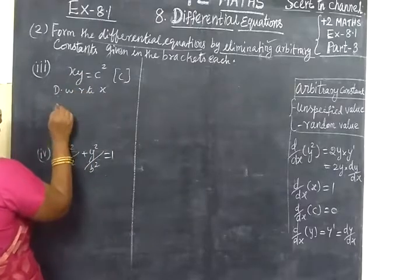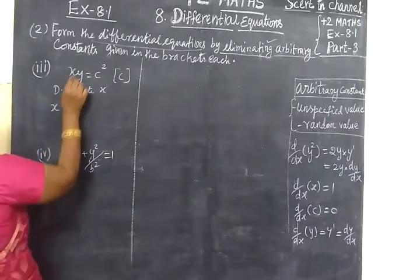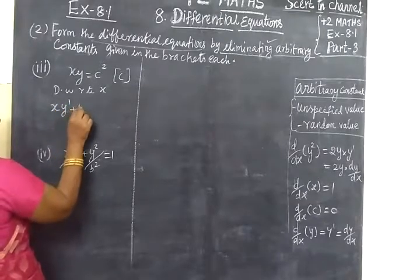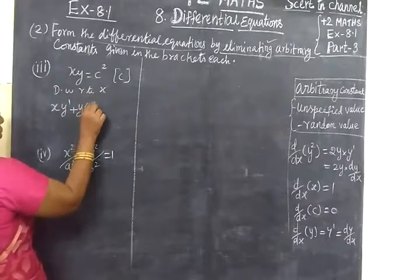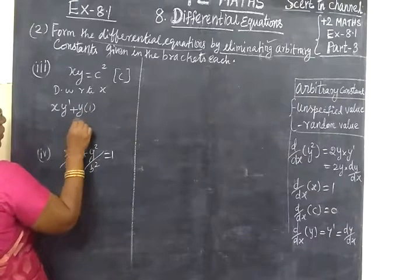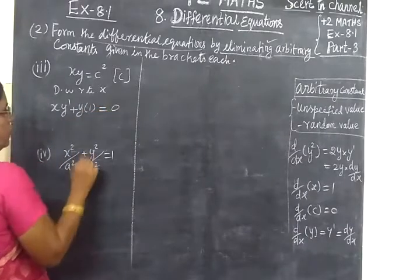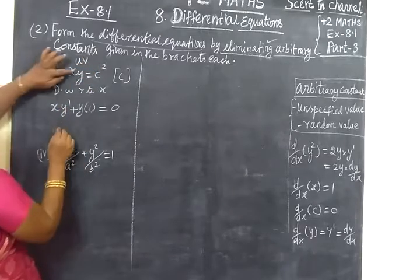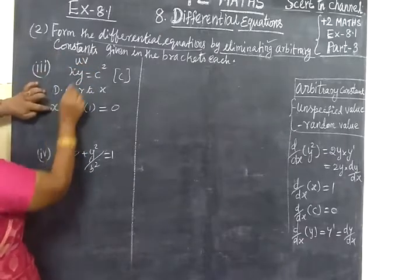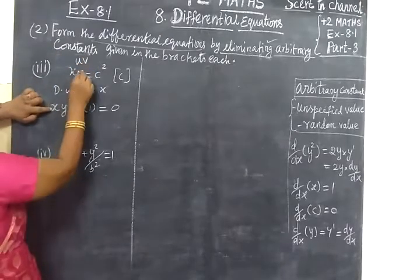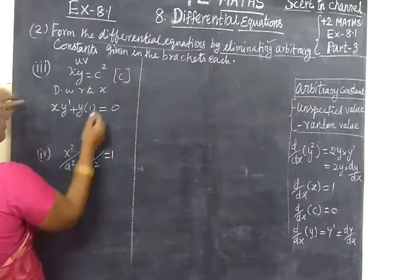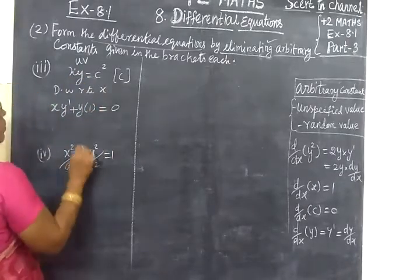So we use the UV method. First function into differentiation of second function, plus second function into differentiation of first function, equal to 0. This is the UV method. Then Y appears with it, and the derivative equals 0.